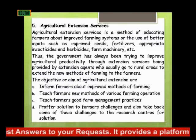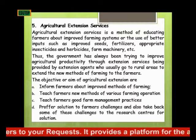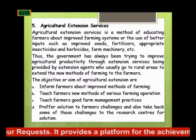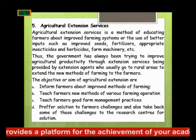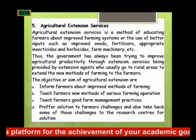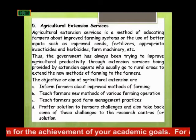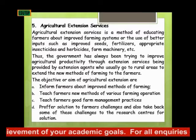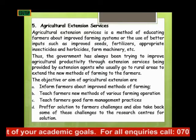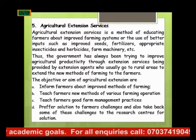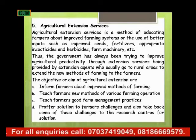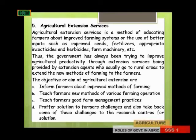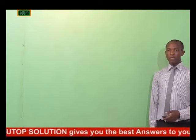The objectives of agricultural extension are: 1. Inform farmers about improved methods of farming. 2. Teach farmers new methods of various farming operations. 3. Teach farmers good farm management practices. 4. Provide solutions to farmers' challenges and also take back some of these challenges to the research centers for solution.